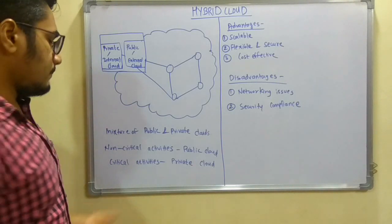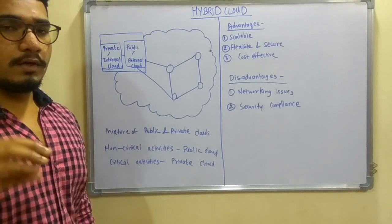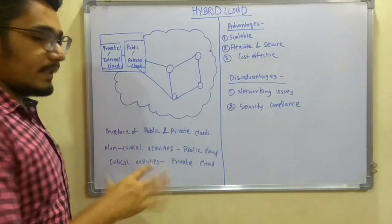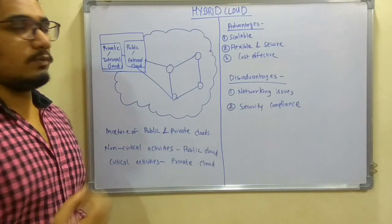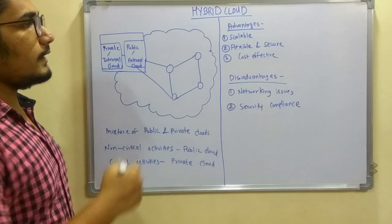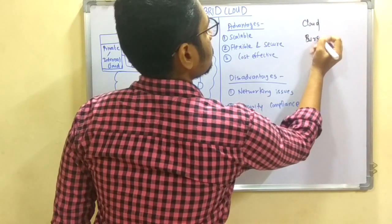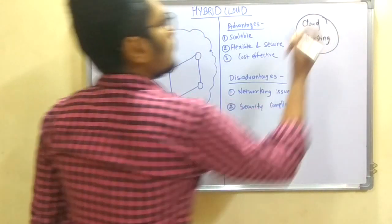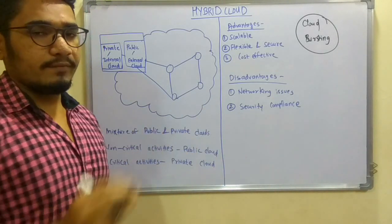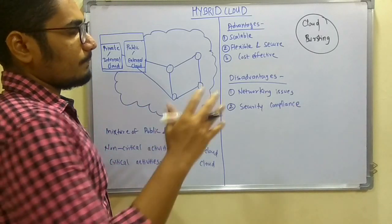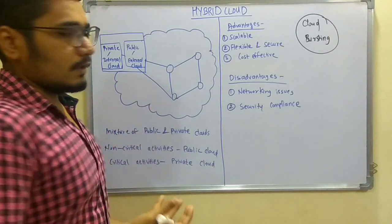To summarize: for non-critical activities, most work is done at the public cloud, and critical activities are done at the private cloud. These two clouds are mainly used in organizations where there is a concept called cloud bursting. Whenever cloud bursting occurs, it indicates a private-public mixture, meaning a hybrid cloud. Organizations that experience cloud bursting mainly use hybrid clouds.